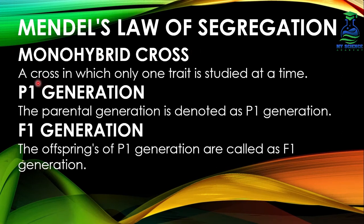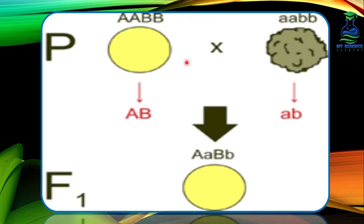What is a monohybrid cross? A cross in which only one trait is studied at a time is called the monohybrid cross. Mendel observed many traits in the pea plant and mathematically proved them. When he studied one trait at a time, he named that cross the monohybrid cross, as monohybrid means one. The parental generation is denoted as P1 generation.